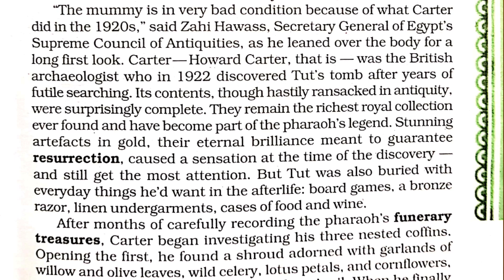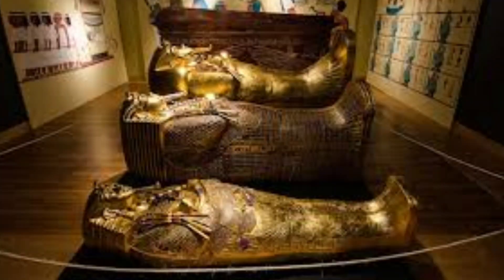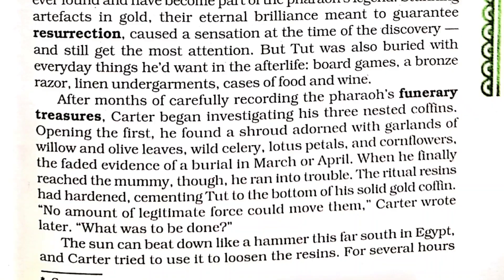After months of carefully recording the Pharaoh's funerary treasures, Carter began investigating his three nested coffins — placed one inside the other in order of decreasing size, with the innermost housing the king's body, weighing about 110 kg. Opening the first, he found a shroud adorned with garlands of willow and olive leaves, wild celery, lotus petals and cornflowers — faded evidence of a burial in March or April. A shroud is a cloth in which the dead body is wrapped.